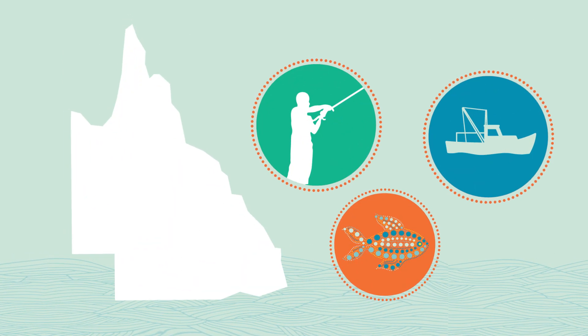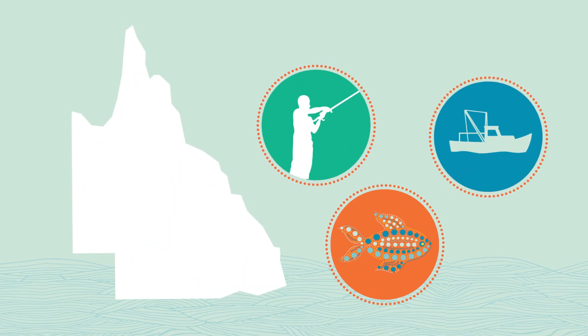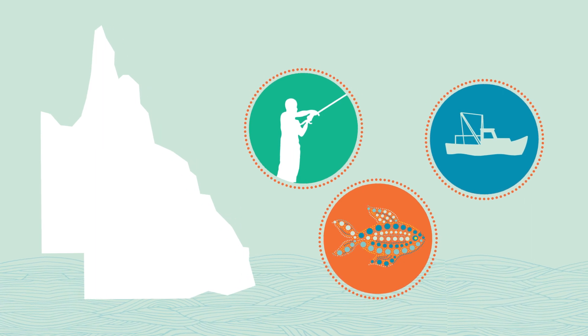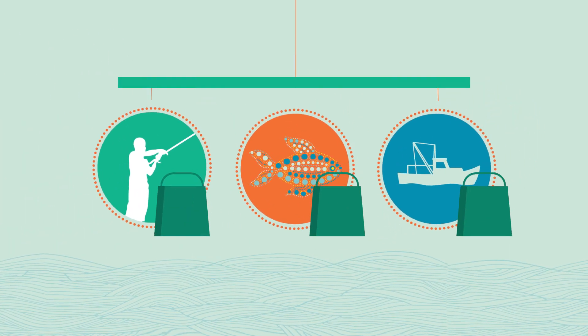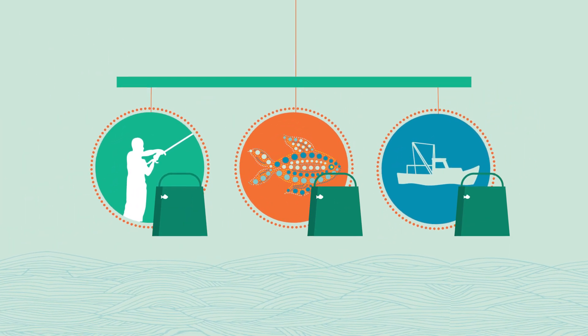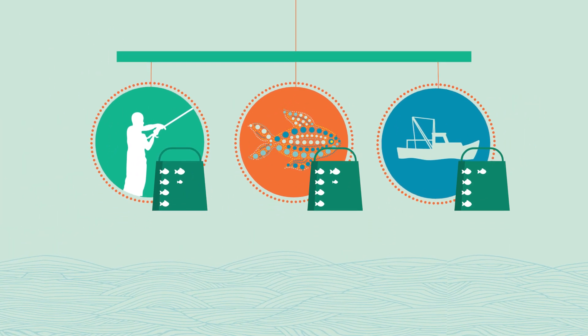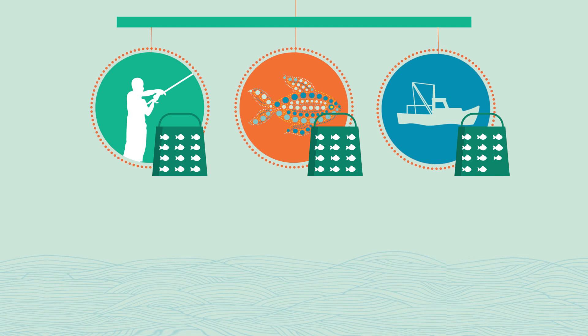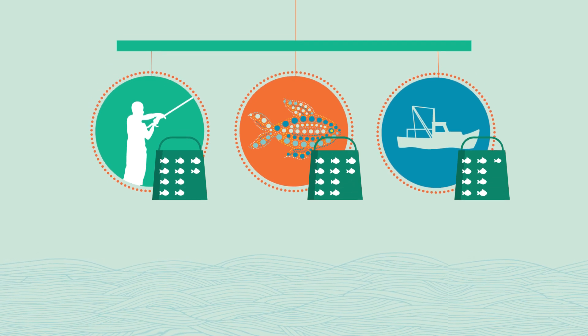In Queensland, harvest strategies will manage the catch of all sectors under a unified management approach. All sectors will have their proportion of the catch adjusted based on the performance of the fishery.